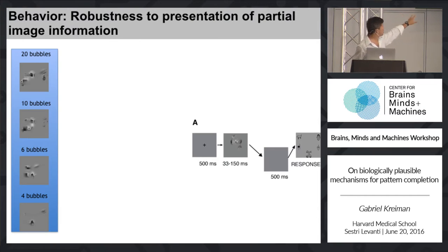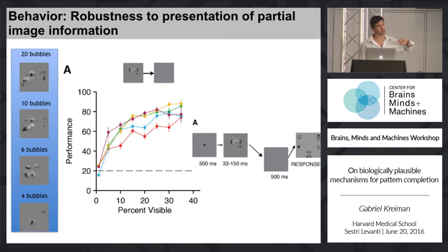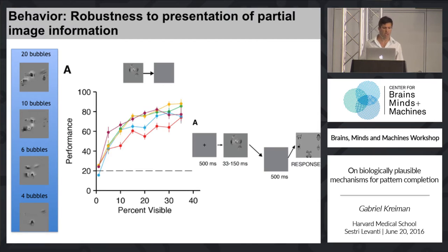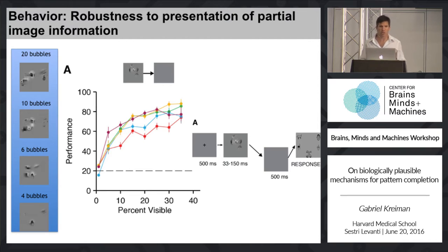In the basic task, there's a fixation, then a variable amount of time during which an object is presented, and then subjects make a five-alternative forced-choice categorization task to recognize these objects. In the behavioral data, each color corresponds to one particular SOA — one particular duration of the stimulus on screen. On the x-axis is the percentage of the object that's visible. Performance is quite robust: even if you show only about 10% of the pixels in the object, people are still performing quite well. So only one in ten pixels is necessary to recognize the object in this five-way categorization task.